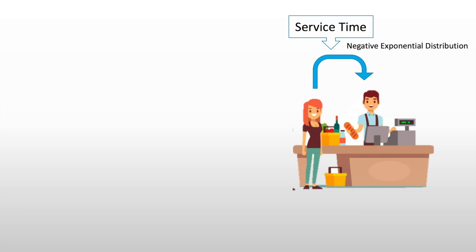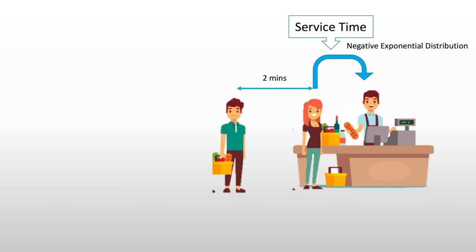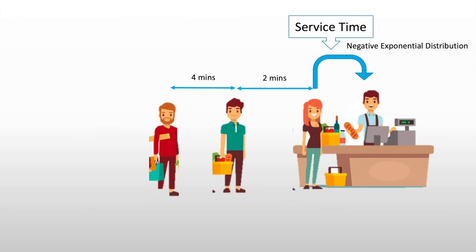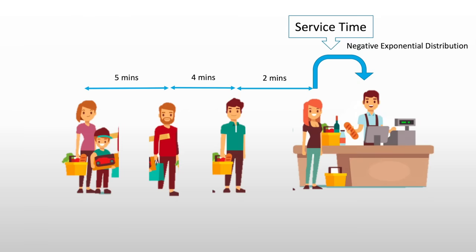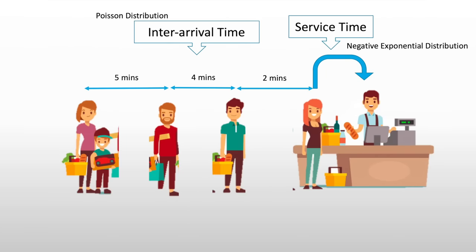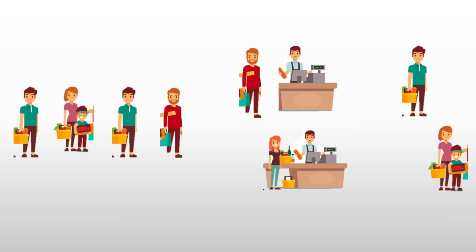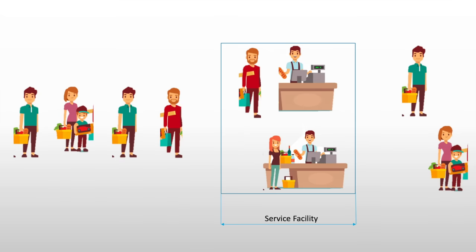Service time is usually under a negative exponential distribution. Then, the inter-arrival time between the different customers — for example, two minutes, four minutes for the next one, and five minutes for the next one — is called the inter-arrival time, and it usually follows the Poisson distribution. Now, let's try putting in two servers and one line. The two servers or the two point-of-sale systems would be your service facility.